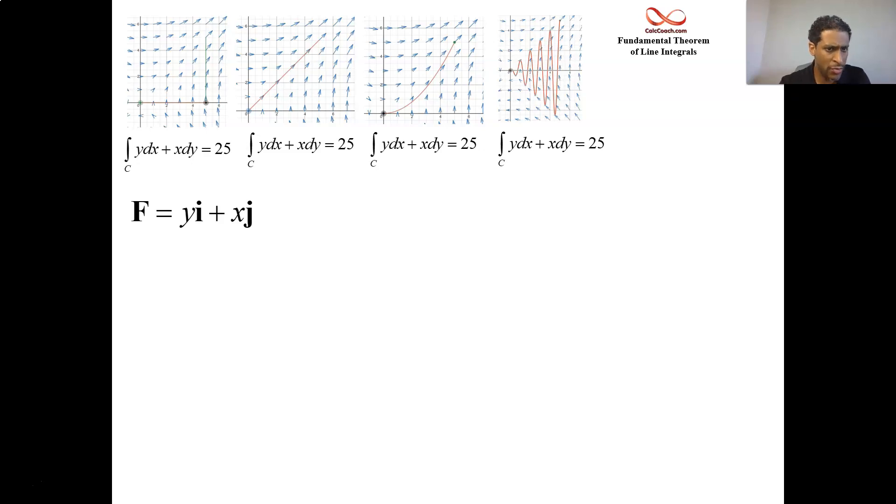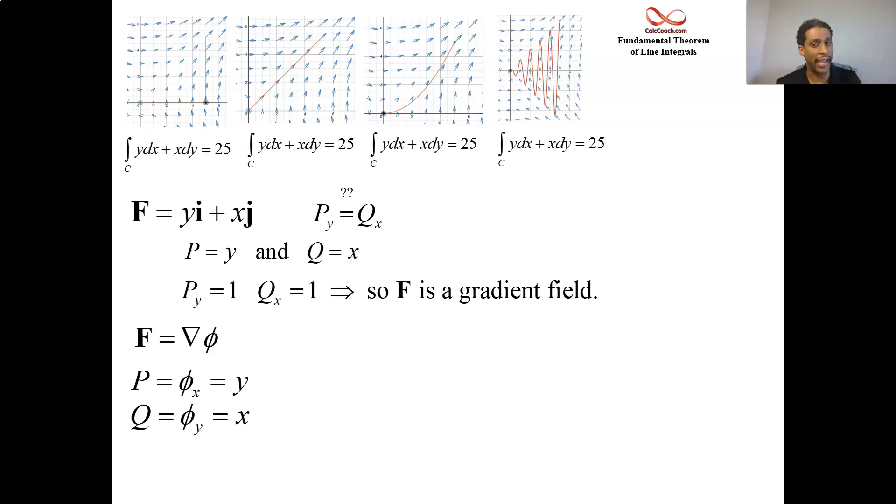Is it true? Is the check true? Is q_x equal to p_y? Well, q_x is 1 and p_y is 1. So yes, it is true that q_x equals p_y. F is a gradient field. F is the gradient of some function. How can we figure out who the function is? How do we find the potential function? Well, p is equal to y and q is equal to x. What could phi be so that the x partial is y and the y partial is x? Just use your intuition. You don't need anything fancy for that. What kind of function has a y partial of x and an x partial of y? It's the function xy.